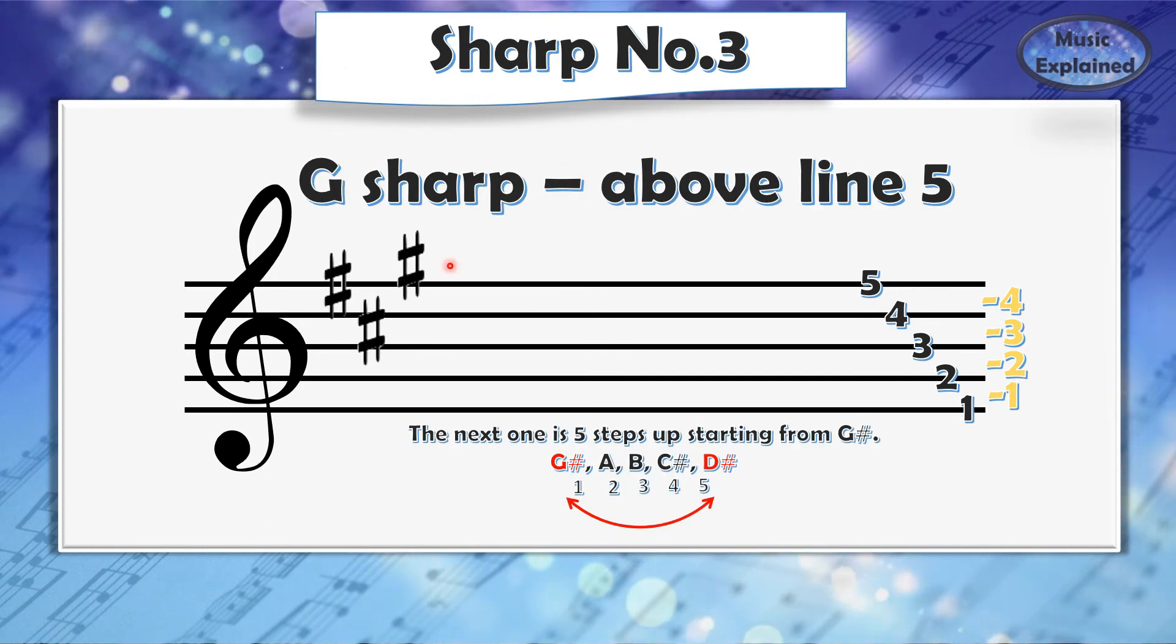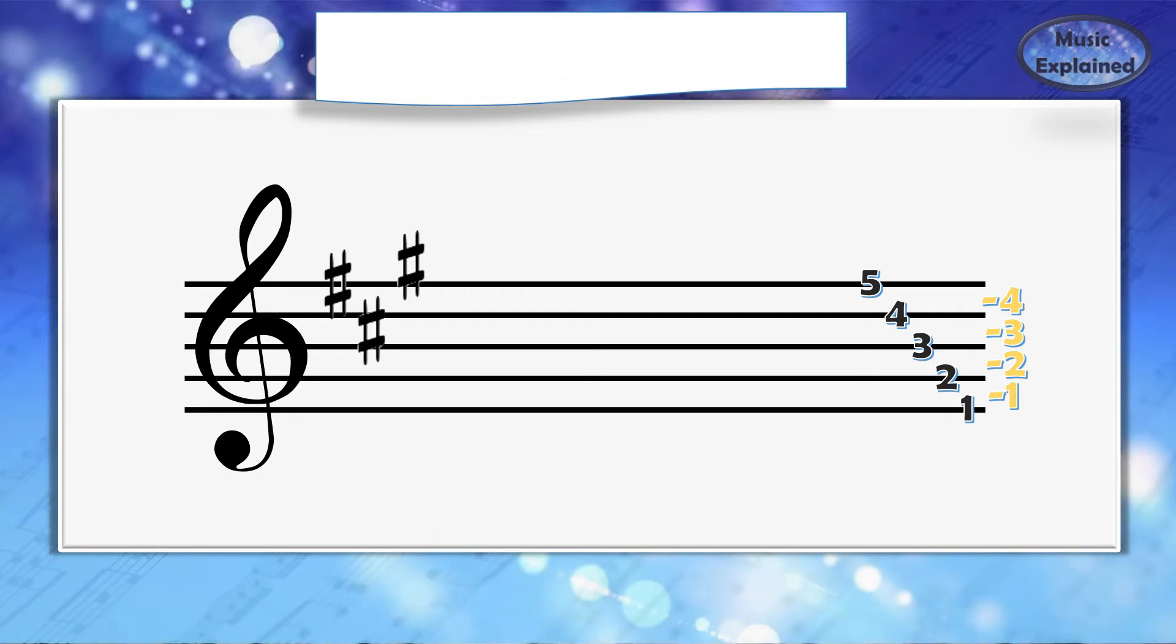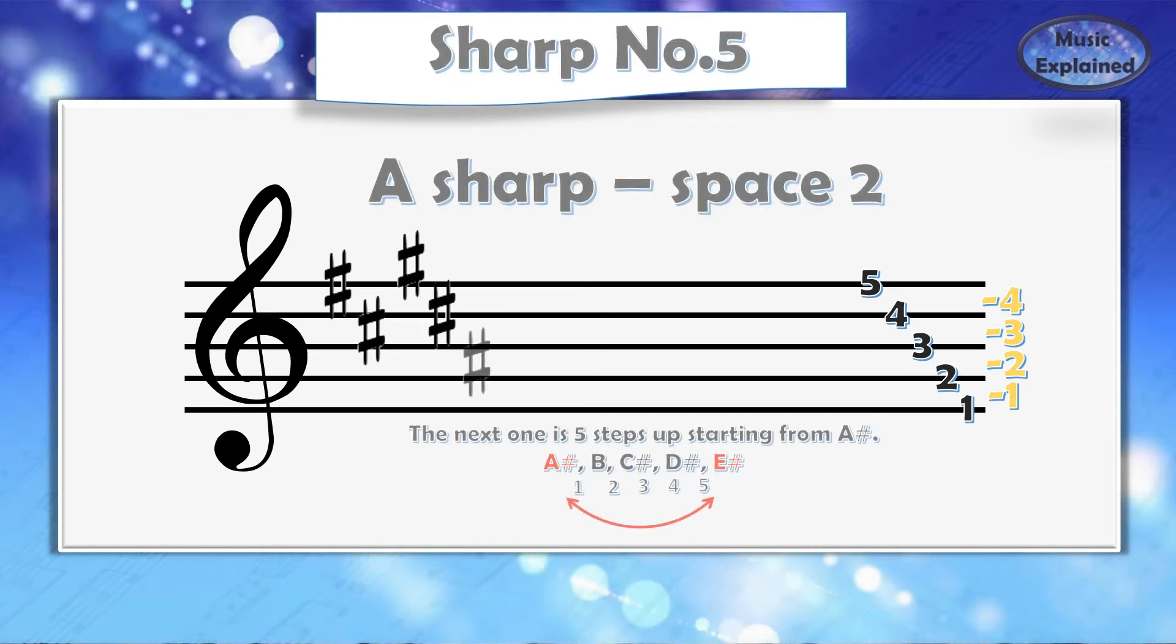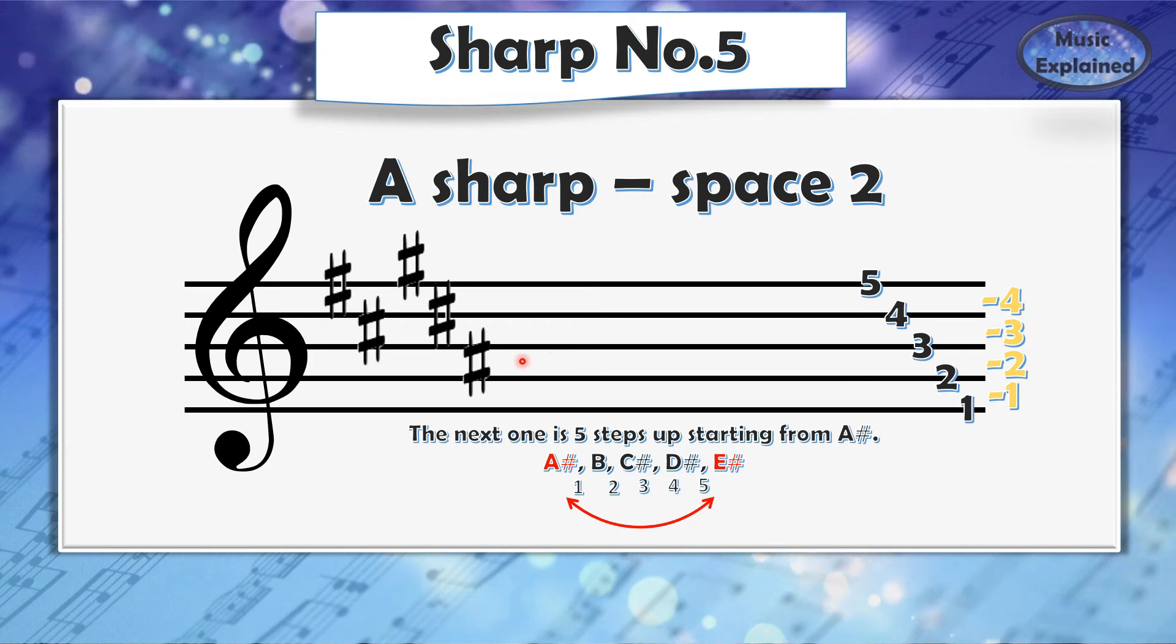C-sharp is on space number three. Next we have G-sharp above line five. D-sharp is on the fourth line of the music staff.